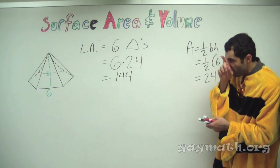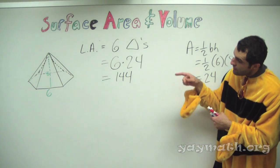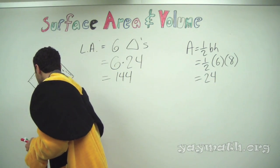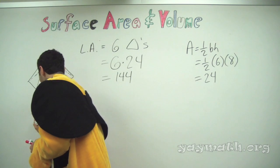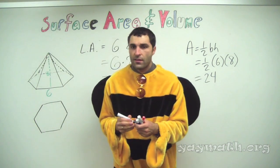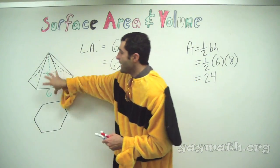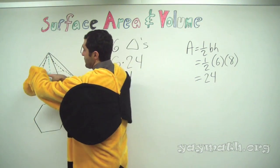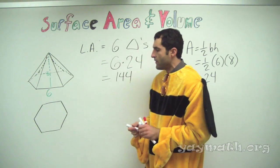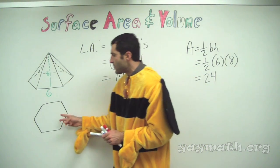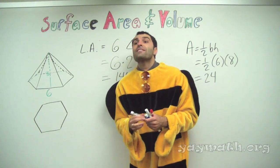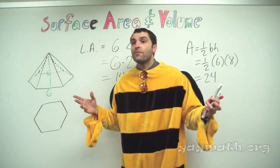Now we're going to do the area of the hexagonal base. I would suggest we redraw it over here. When you redraw it, you're going to redraw in two dimensions — like you take it and paste it flat. Notice this is in three dimensions with a little perspective, but now I'm redrawing it so I can work with it in two dimensions. It's like looking down from above.